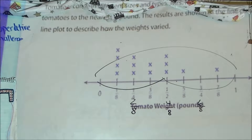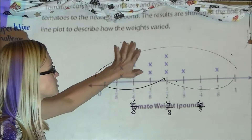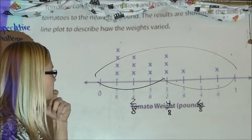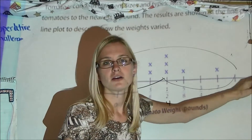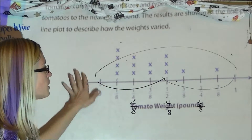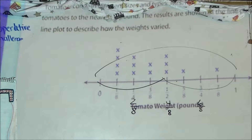Question C asks: are most of the tomatoes on the heavier or lighter side of the scale? Again, looking at frequency — where do I see the most data marks? Most data marks are on the lower side. I'm noticing that 0 pounds is pretty light and 1 pound is heavier. So most data marks are on your lighter side. The highest frequency is the lighter-sized tomatoes.